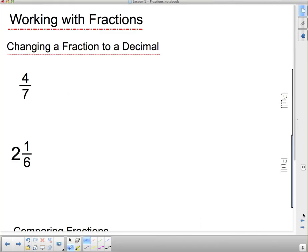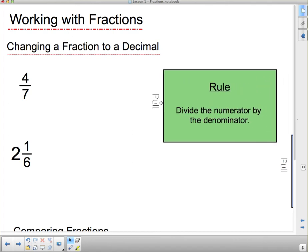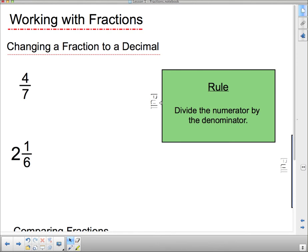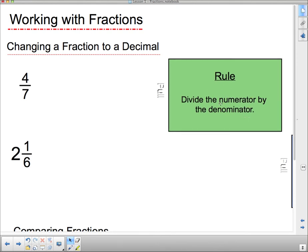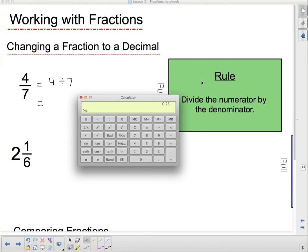So, I'm going to go to the next slide here. And this says, changing a fraction to a decimal. And I've already told you how to do that. So, here's my pull tab, and when I pull it out, it says, the rule is, divide the numerator by the denominator. So, that's all we're going to do. If I want to figure out what 4 sevenths is as a decimal, I take 4 and divide it by 7. And 4 divided by 7, if we bring out my calculator, 4 divided by 7 equals,